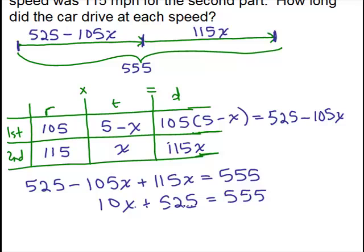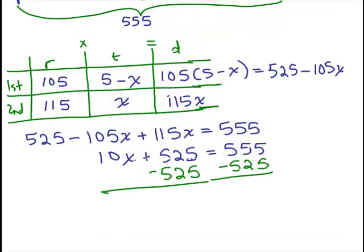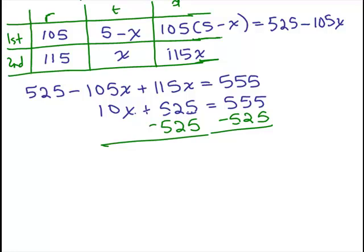And then we want to get the variables on one side, constants on the other. So we need to subtract 525 from both sides. So on this side, we're left with just the 10X. And on this side, we're left with 30. And so when we divide both sides by 10, we get X equals 3.